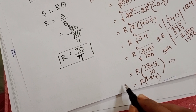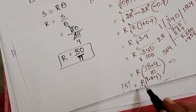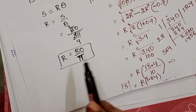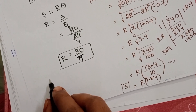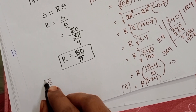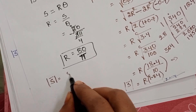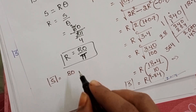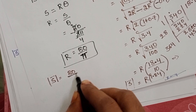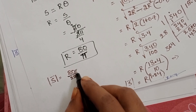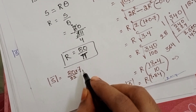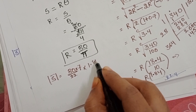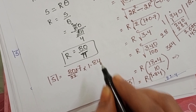This is the magnitude of the displacement. Now substituting the value of R = 80/π, using π ≈ 22/7: displacement = (80/π) × 1.84 = 80 × 7/22 × 1.84.